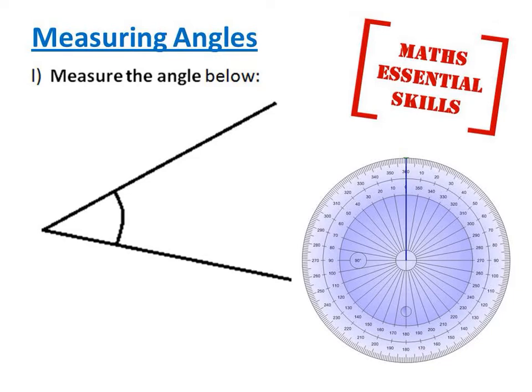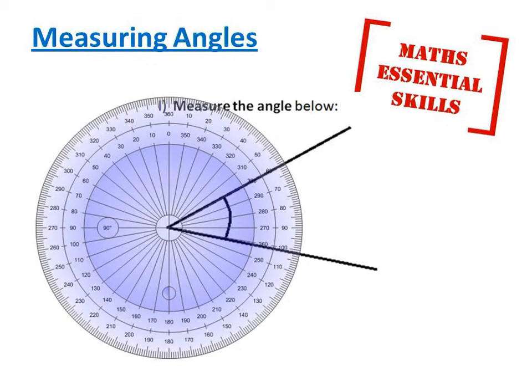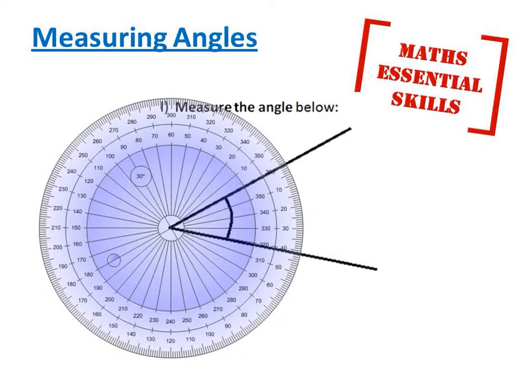To measure the angle below we need to use a protractor. Make sure the center of the protractor is on the point of the angle. Line it up so the zero line is on the first of the black lines on the angle and now read off the angle.